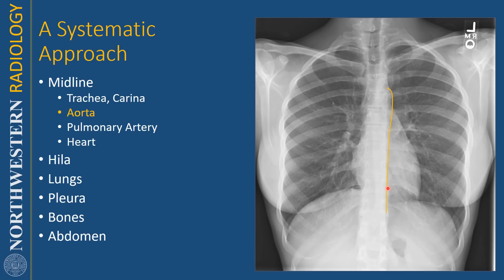I look at the aortic arch and the aortic descent, making sure I can see it all the way down. Then I move to the pulmonary artery, making sure that it's not enlarged. I look at the AP window — that space between the aorta and pulmonary artery — making sure there are no enlarged lymph nodes there.